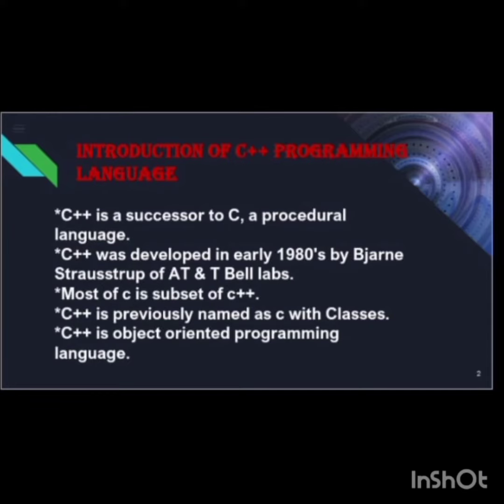C++ is a successor to C, a procedural language. C++ was developed in early 1980s by Bjarne Stroustrup at AT&T Bell Labs. Most of C is a subset of C++. C++ was previously named as C with classes. C++ is an object-oriented programming language.